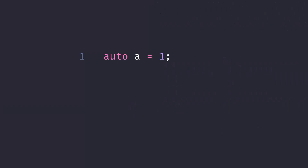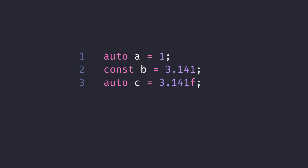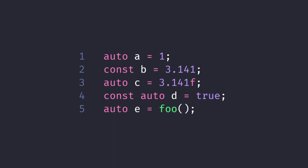Auto. Declaring the type of a variable can be tedious, especially when the compiler can infer it from the assigned value. C++ provides the auto keyword for automatically deducing a variable's type. Here, a is deduced to an integer, b to a const double, c to a float, d to a const bool, and e to whatever the return type of this function is.